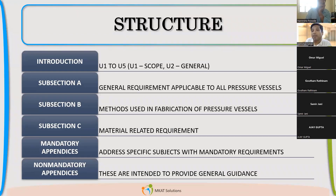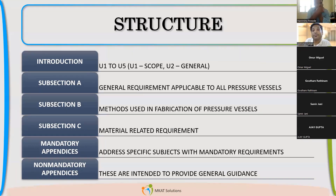Subsection A is the main part of ASME Section 8 Division 1. It is the biggest section — it will have the most pages assigned to it. Subsection A is very important. Most of the design clauses you will find in subsection A.